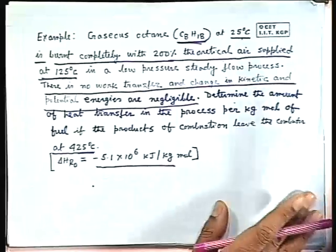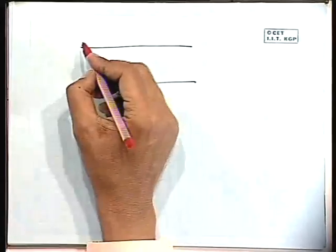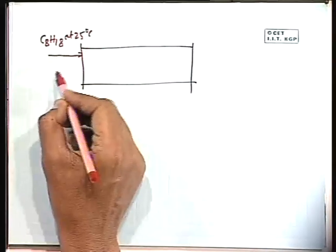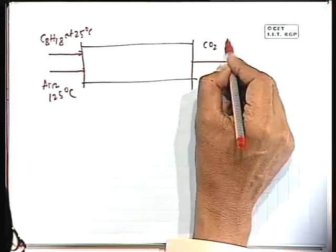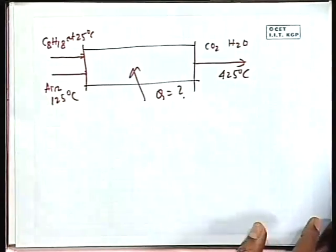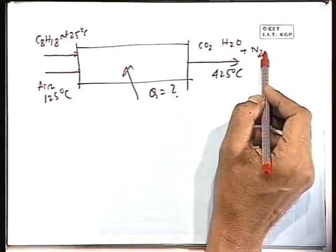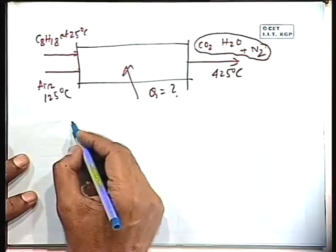I will draw the steady flow system: C₈H₁₈ enters at 25°C, air at 125°C. The products are CO₂, H₂O, plus excess O₂ and N₂. When 200 percent theoretical air is used — double the stoichiometric air — there will be complete combustion. The products will be carbon dioxide, water vapor, plus excess oxygen and nitrogen.